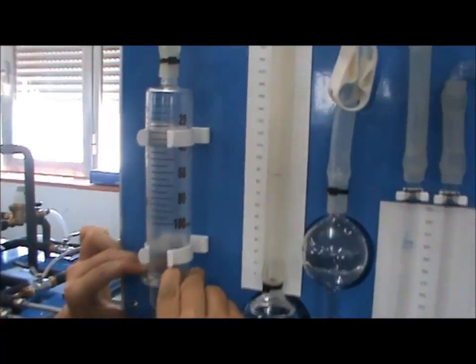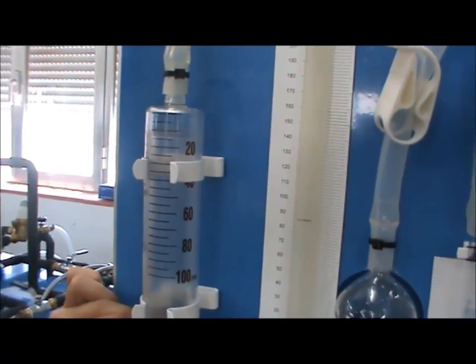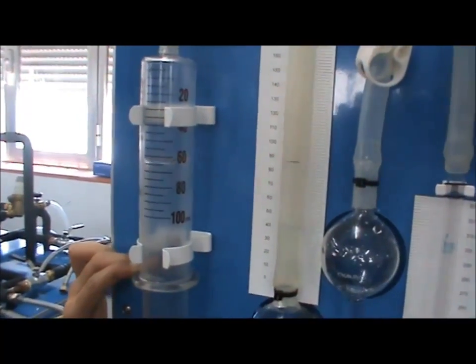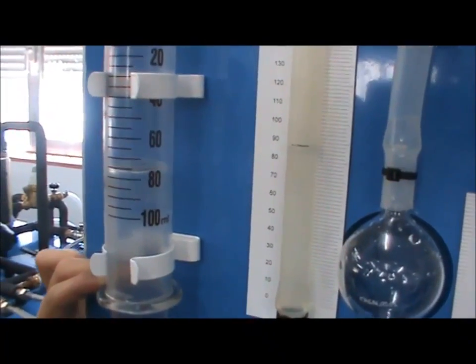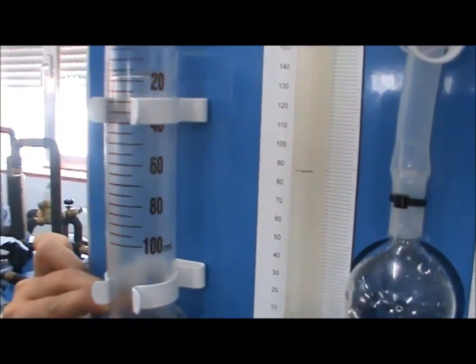Continue this process until you are able to easily compress the plunger, and the volume reduction in the syringe is constant. Now the absorption by the KOH solution is complete.